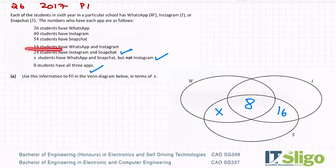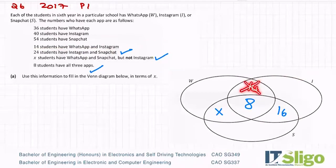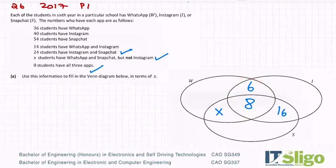14 students have WhatsApp and Instagram. Not 14 that goes in that overlap region directly — I subtract the 8 from the 14 to give me 6. And now I have 14 students that have Instagram and WhatsApp accounted for. I hope that makes sense.